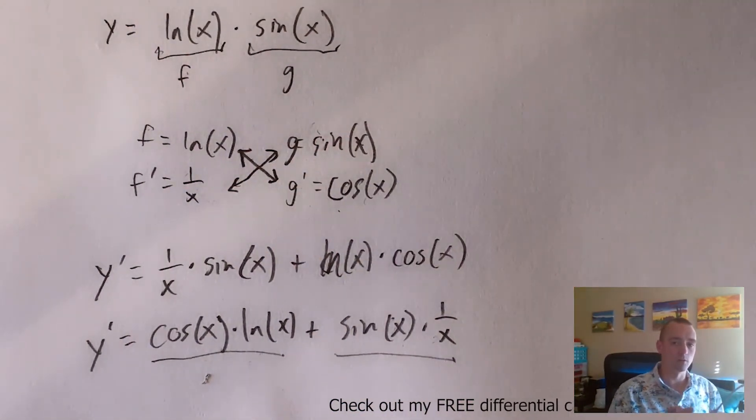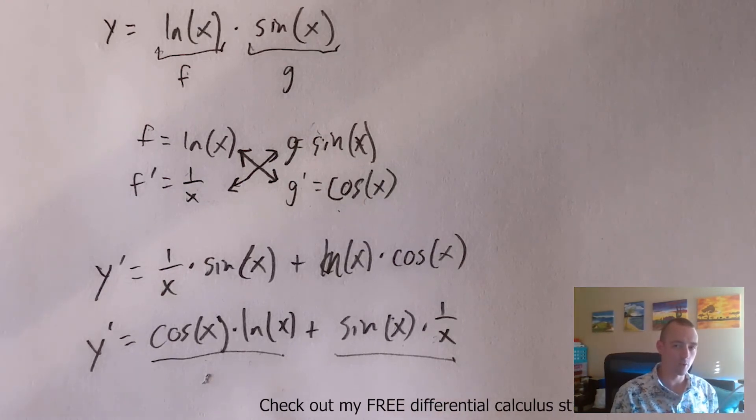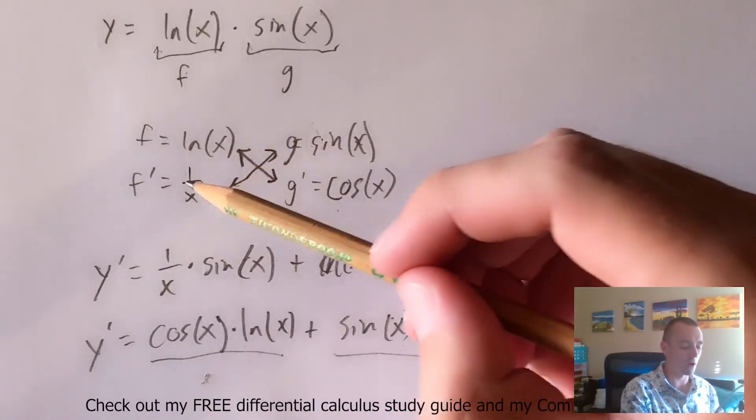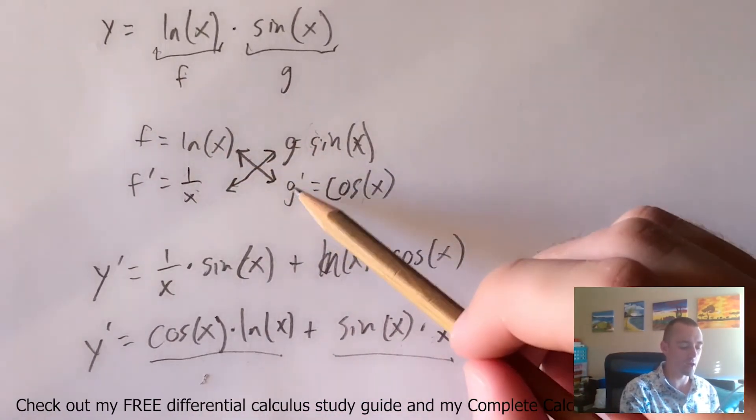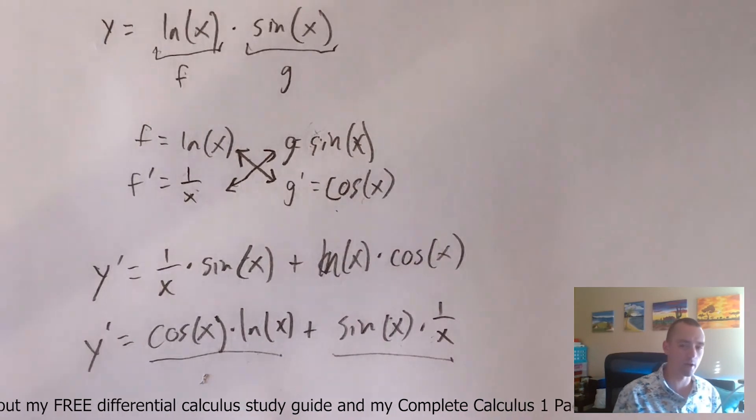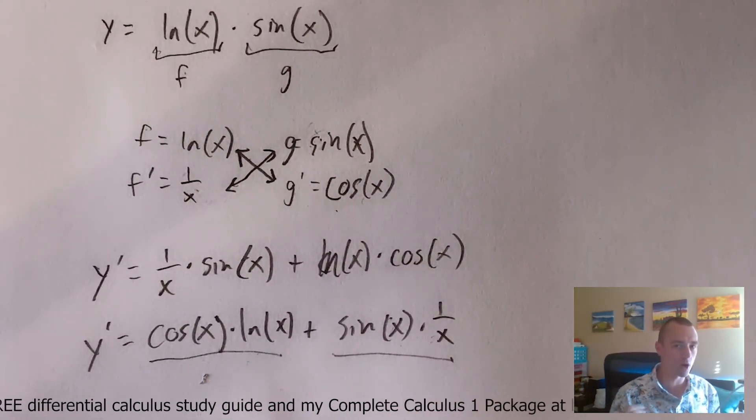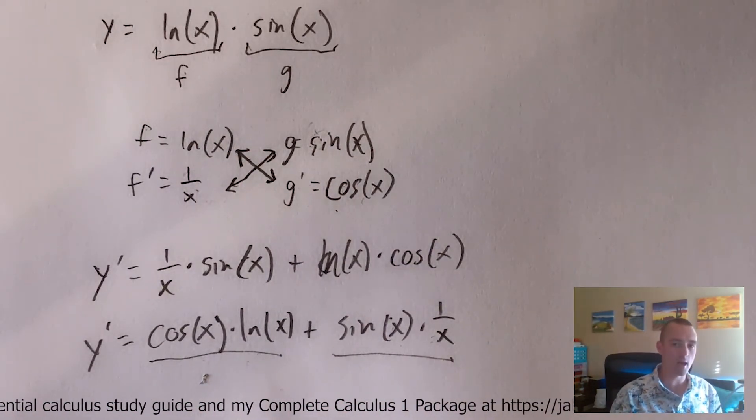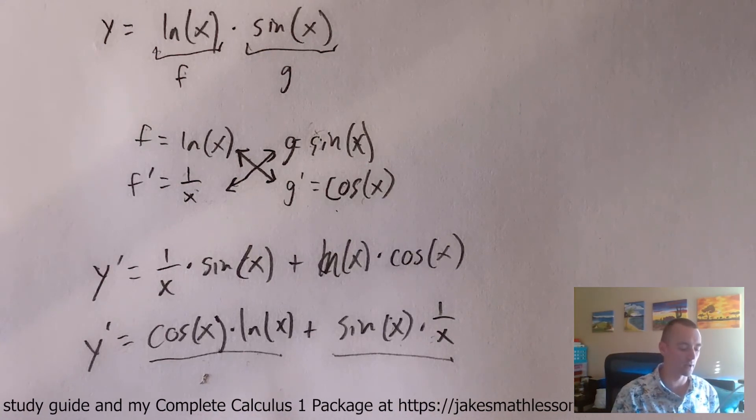So my point here is what's really simple and nice about the product rule is as long as you're making sure to figure out your f, your g, your f prime, your g prime, and then do this kind of cross multiplying where you do one original times the other derivative, and then add up whatever you get, you're going to end up with the correct answer.